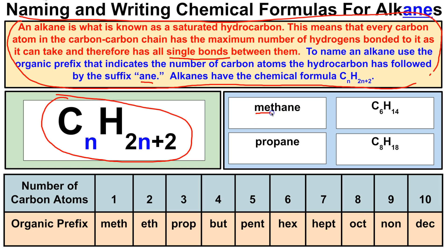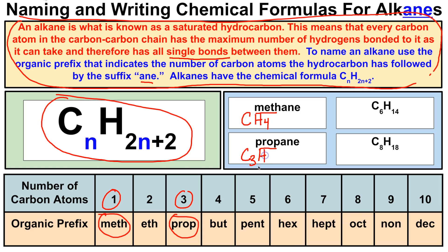So if we're asked to write the chemical formula for methane, we see 'meth-', which means one carbon atom, so we write C. Then plugging into the formula: 2 times 1 is 2, plus 2 is 4, so the chemical formula for methane is CH₄. For propane, the prefix 'prop-' means three carbon atoms, so we write C₃. Plugging in: 2 times 3 is 6, plus 2 is 8, so the chemical formula for propane is C₃H₈.